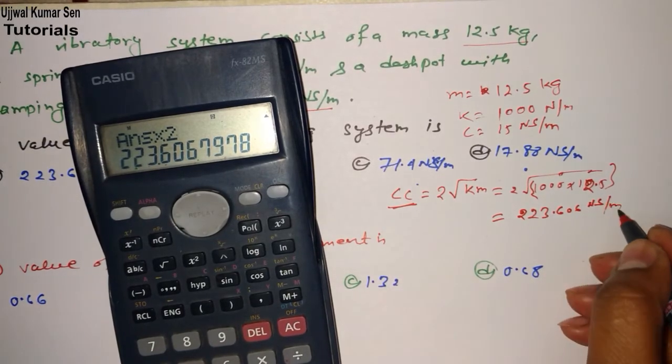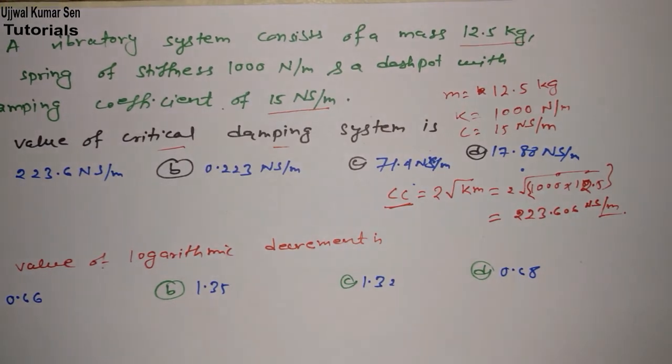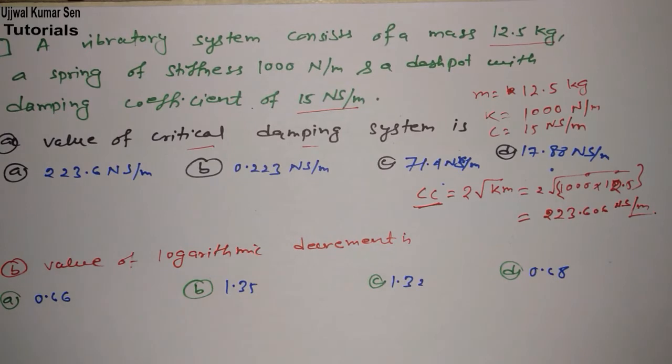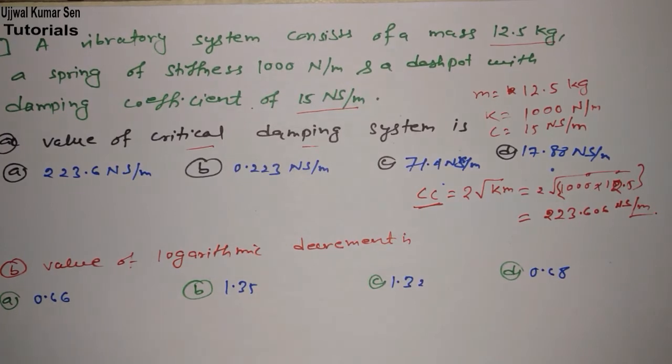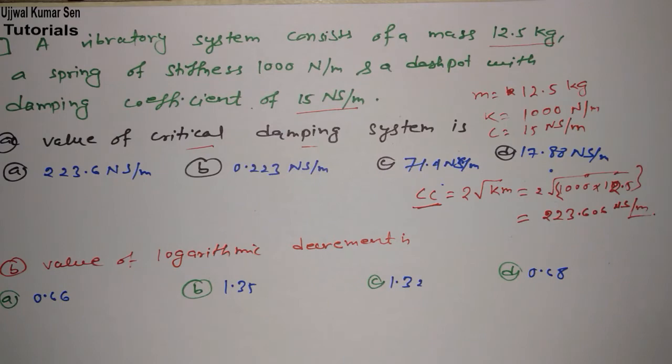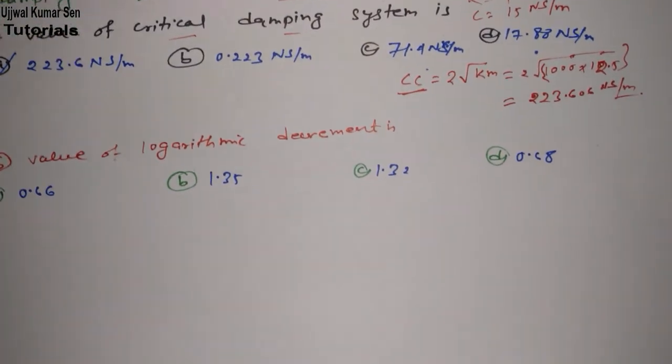Equals 223.606 critical damping coefficient newton second per meter. Now can you guess which one is the right answer? Check which one is the right answer. As you can see the right answer is option A, just mark that option and get marks.